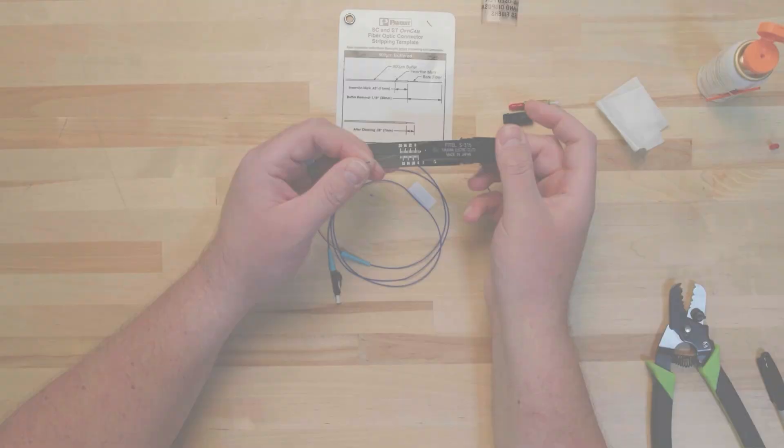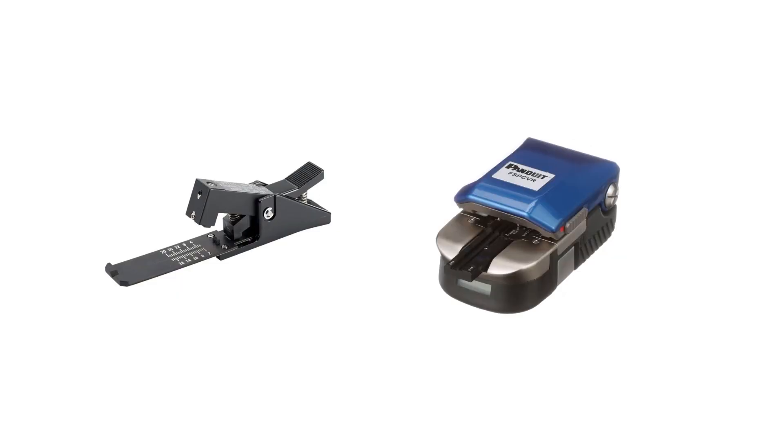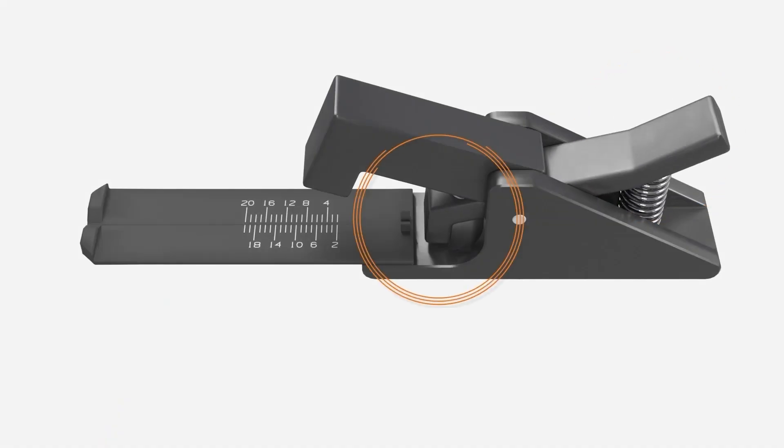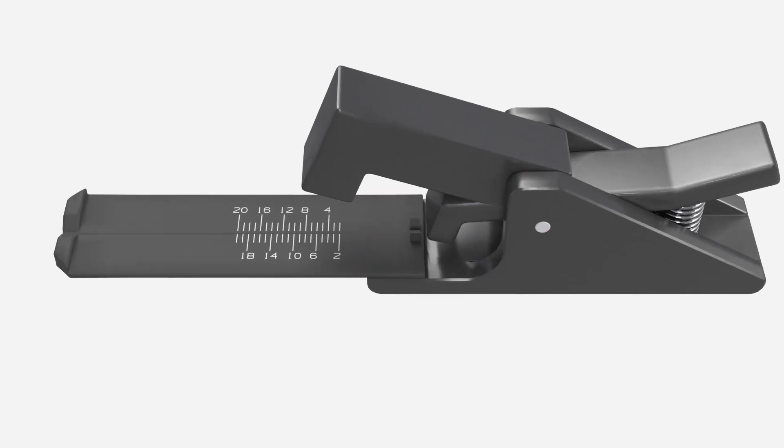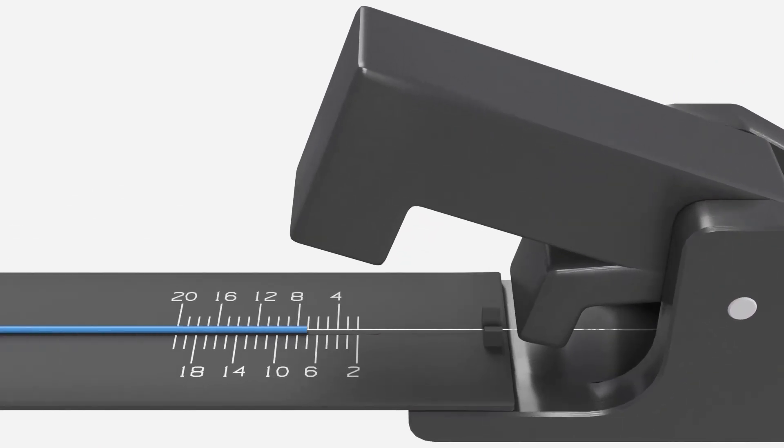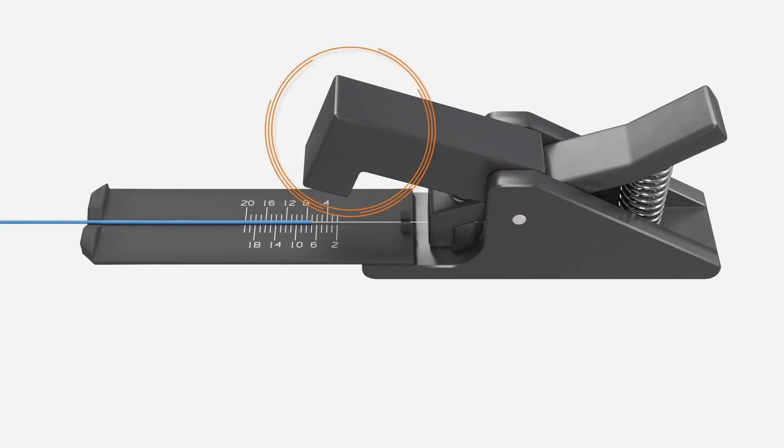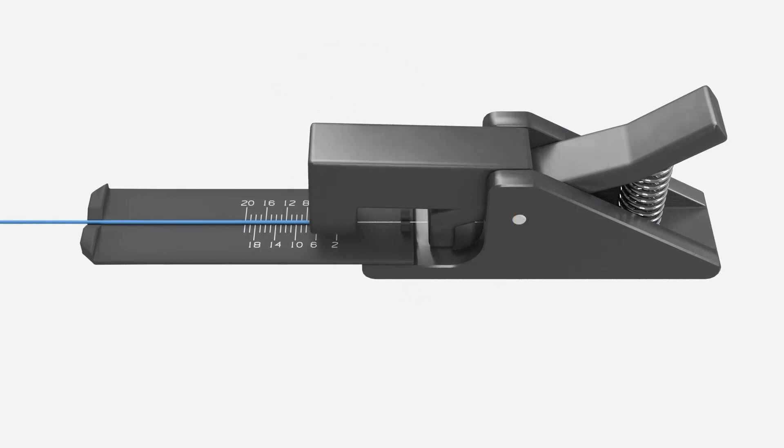The next step is to cleave the bare fiber so that it is exactly 7 millimeters long. Panduit offers two different cleavers, FJQ-CVR and FSP-CVR. Panduit's FJQ-CVR cleaver is a manual device. Press the handle on the back of the cleaver to lift the grip. Slide the bare fiber through the V-groove until the end of the buffer sits at the 7 millimeter mark. Release the handle so the grip lowers onto the fiber, holding it in place. Keep the fiber taut and gently but firmly press the blade onto the fiber once and only once to score the fiber.